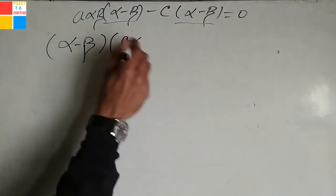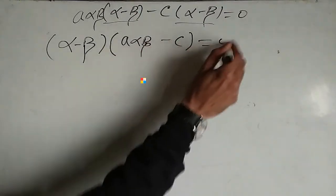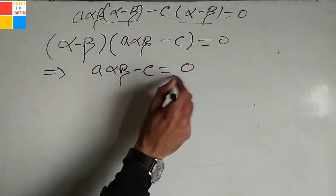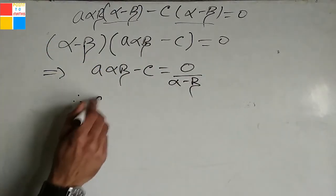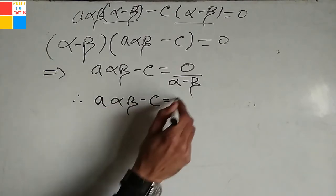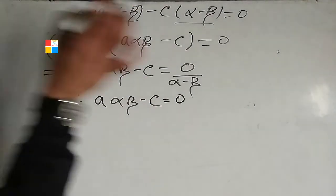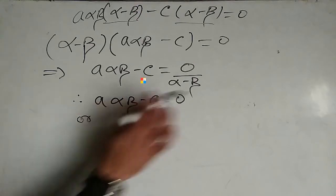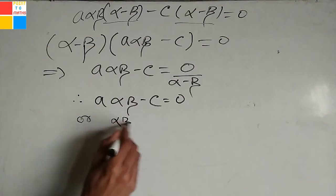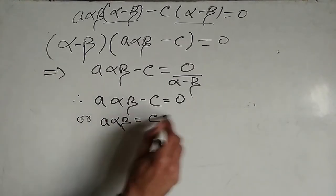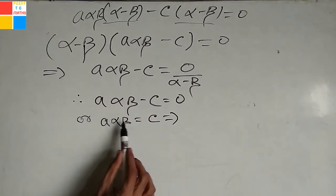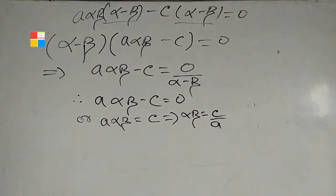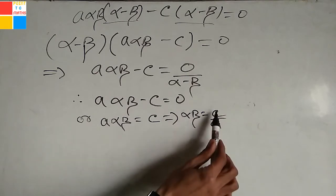Here a·alpha·beta minus c is equal to zero, since dividing both sides by (alpha minus beta) — which is not zero as alpha and beta are distinct zeros — gives a·alpha·beta minus c equals zero. Therefore a·alpha·beta equals c, which further implies alpha·beta equals c divided by a. So by concluding our topic, the product of zeros is always equal to c divided by a.